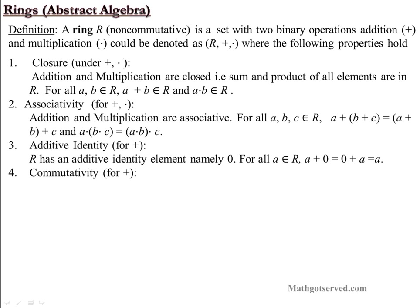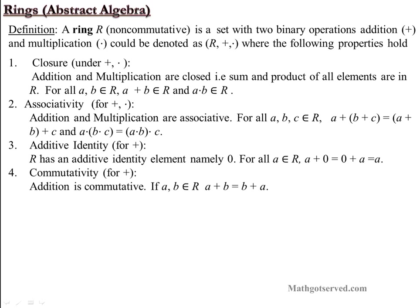The next property is the commutative property. For non-commutative rings, we have commutativity for addition only. This is where the non-commutative aspect comes into play — the non-commutativity applies just to multiplication. So for a non-commutative ring, addition is still commutative; it is only multiplication that is not commutative. The order in which you add elements does not matter: A plus B equals B plus A.